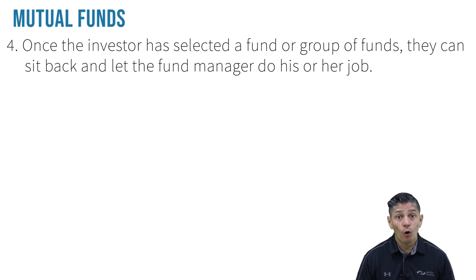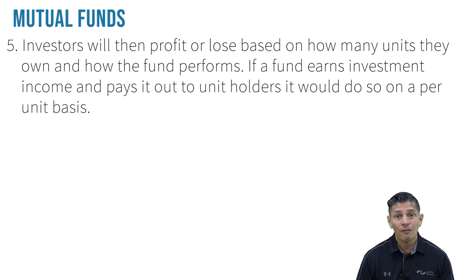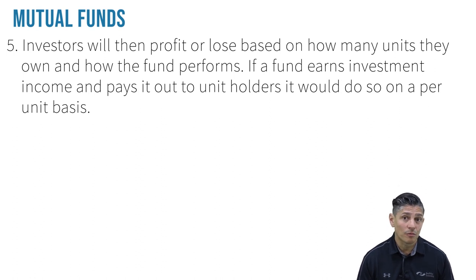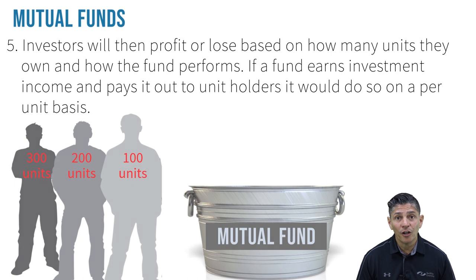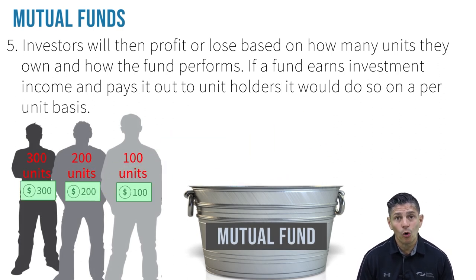Number four, once the investor has selected a fund or group of funds, they can sit back and let the fund manager do his or her job. And number five, investors will then profit or lose based upon how many units they own and how the fund performs. In other words, if a fund earns investment income and pays it out to unit holders, it would do so on a per unit basis.